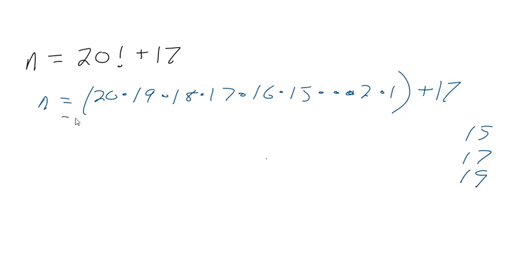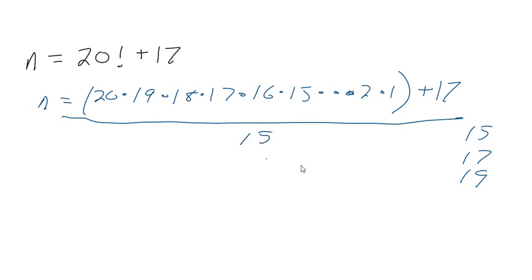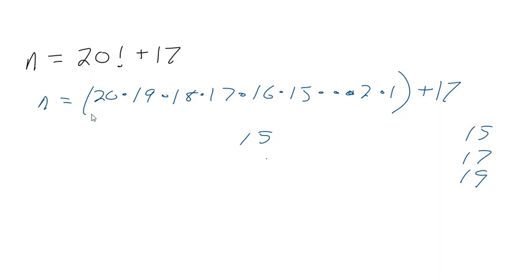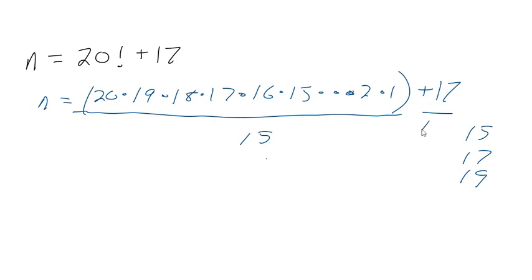Let's just think about this. Here's the key: you have to remember that we could split this into two different fractions, because what we have written here is the same as dividing 20 factorial by 15, plus 17 divided by 15.